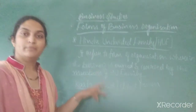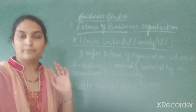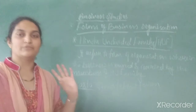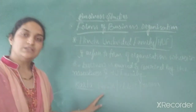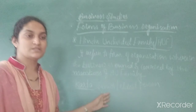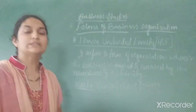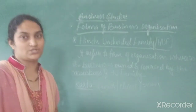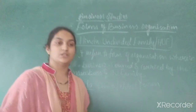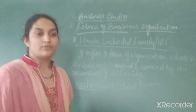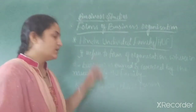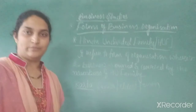Members can become part of the business by their birth in the family. They become a member of the HUF business up to three successive generations. This is what constitutes a Hindu Undivided Family.